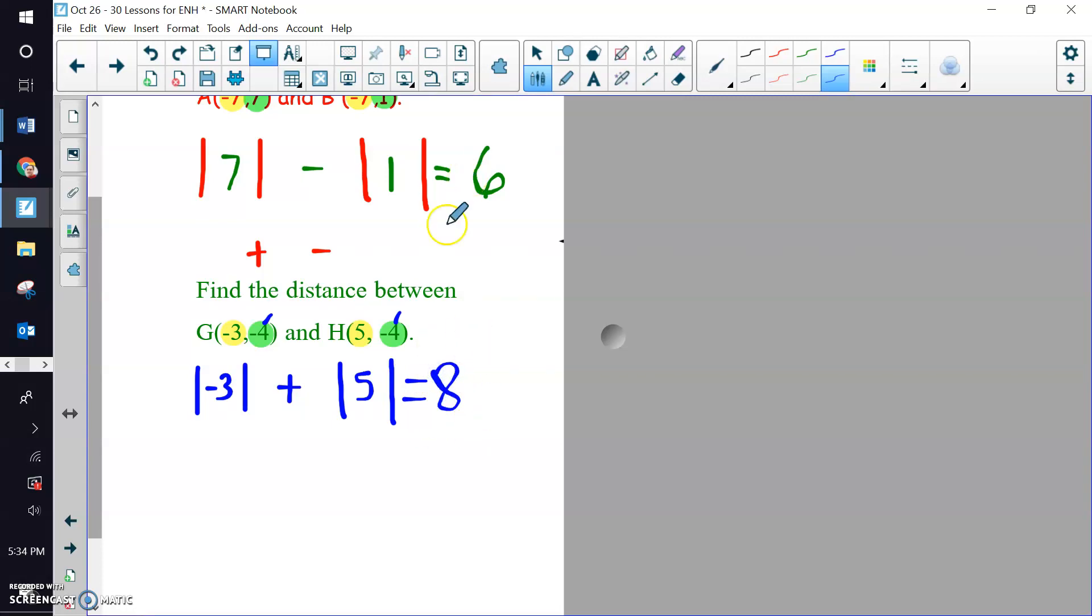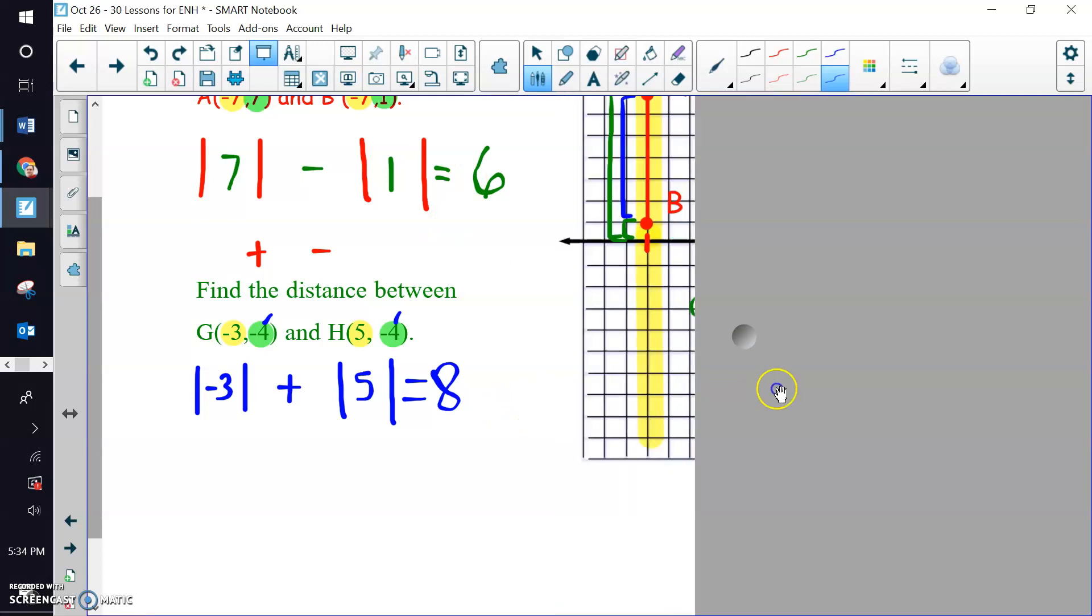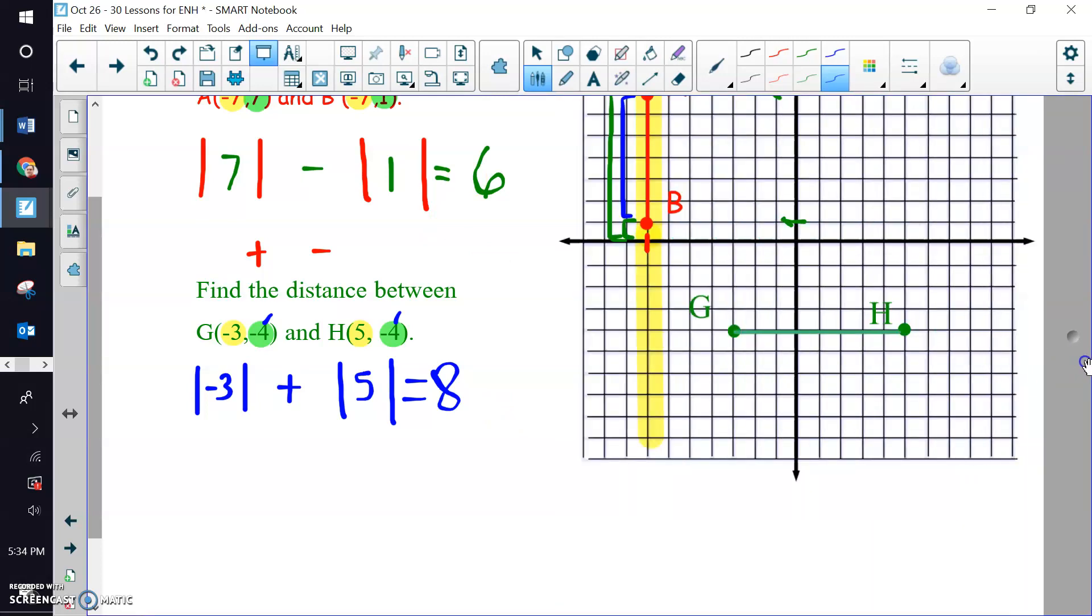Just plain 8. No absolute value symbols in this case. We don't really know units. So we wouldn't say 8 feet or 8 miles or anything. And so you can see on our coordinate plane why we add. Because point G, look how far it is from the y-axis. It's 3 away. Point H, look how far that is. It's 5 away.